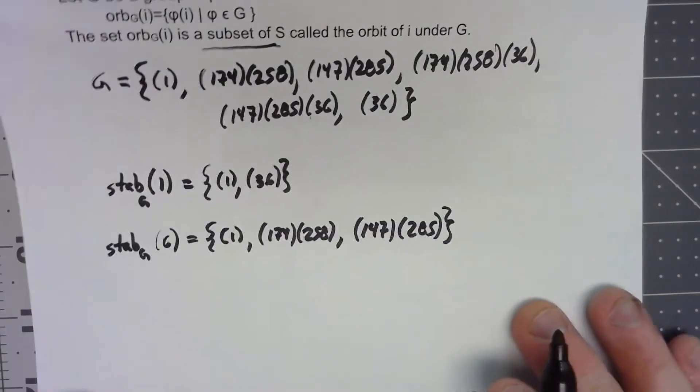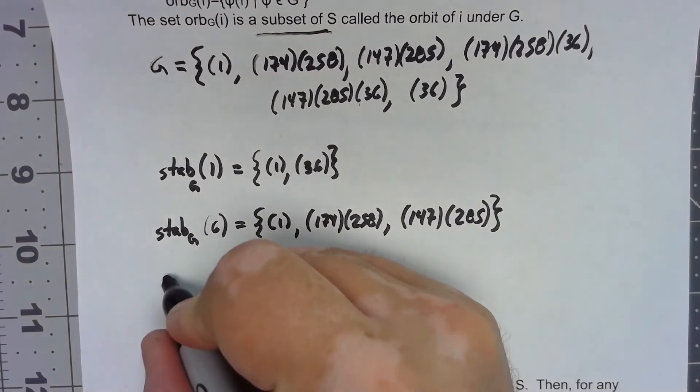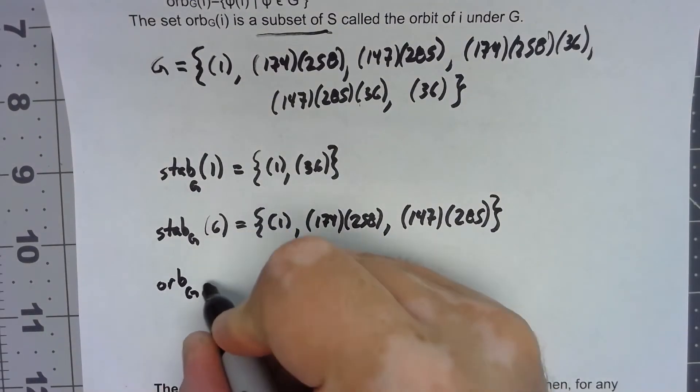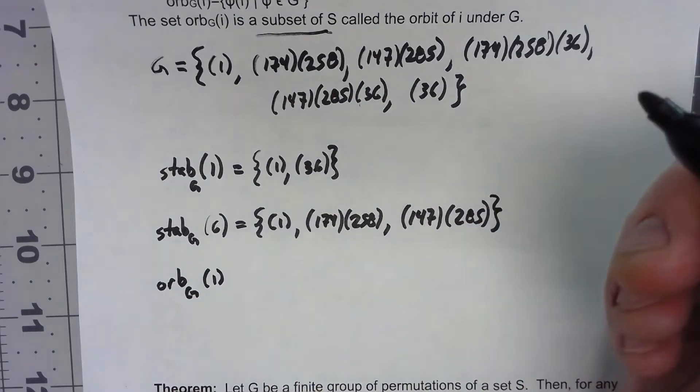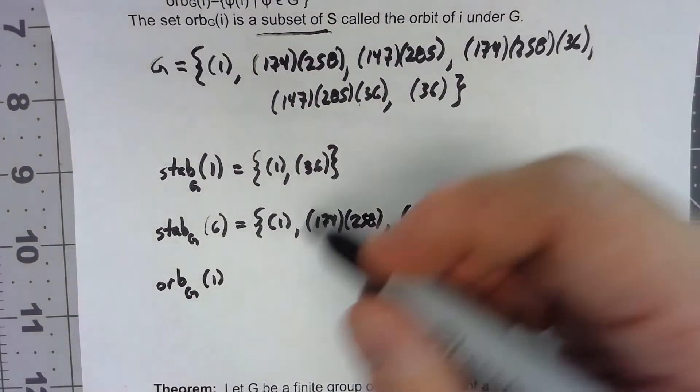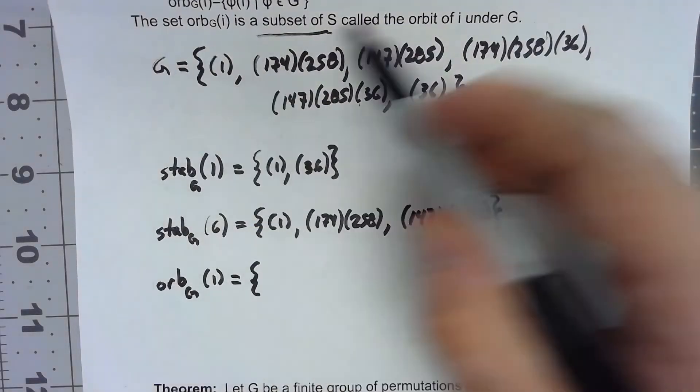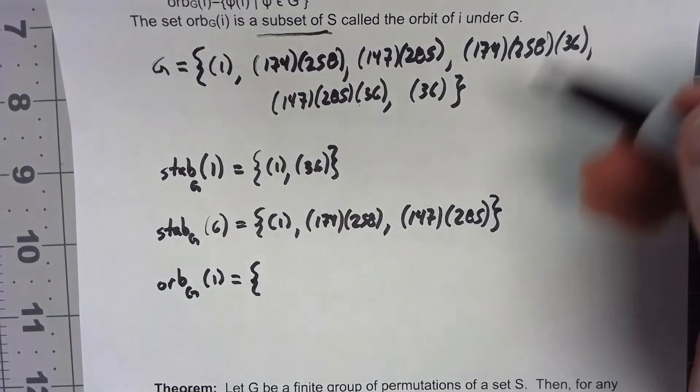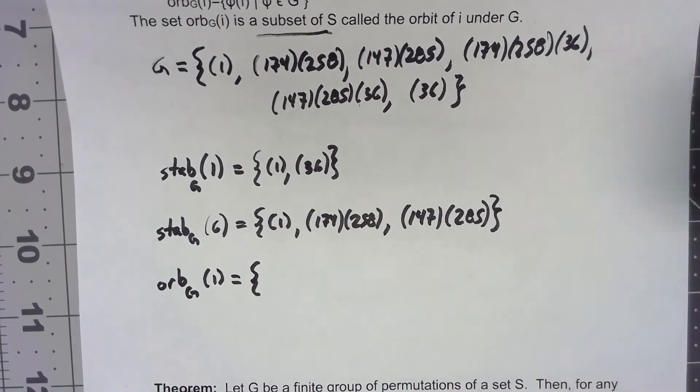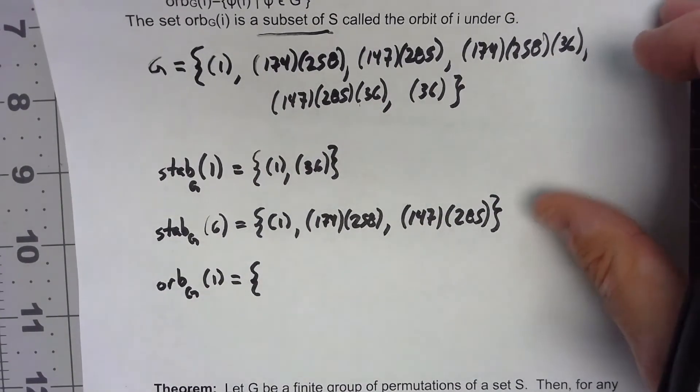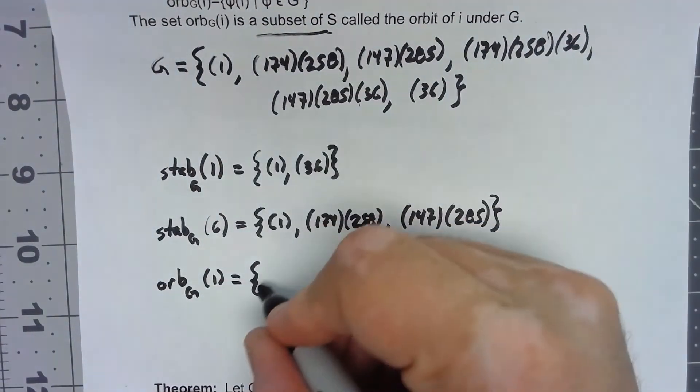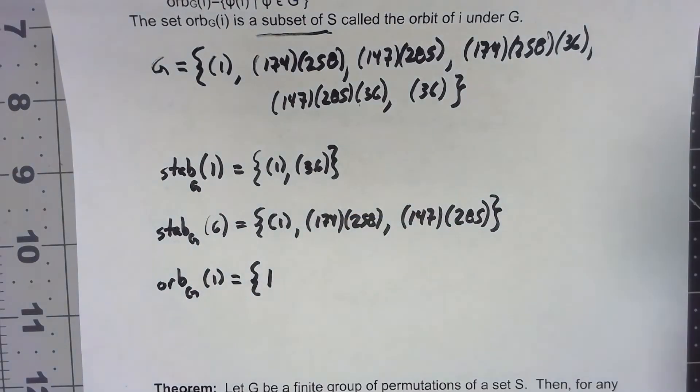Now what about the orbits? So what is the orbit in G of one? So what we do is we take every element of G, we apply it to one, and see where one ends up under those permutations. So certainly under the identity, one ends up on one.